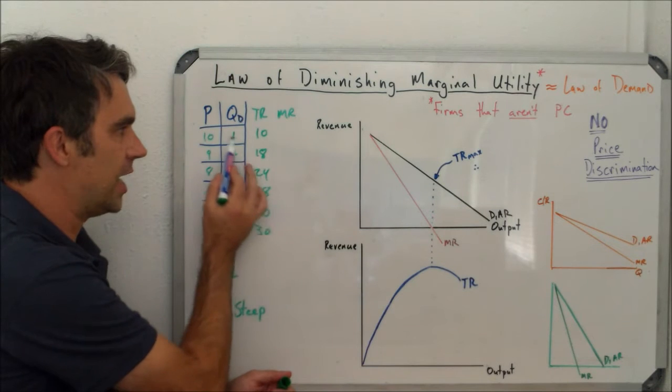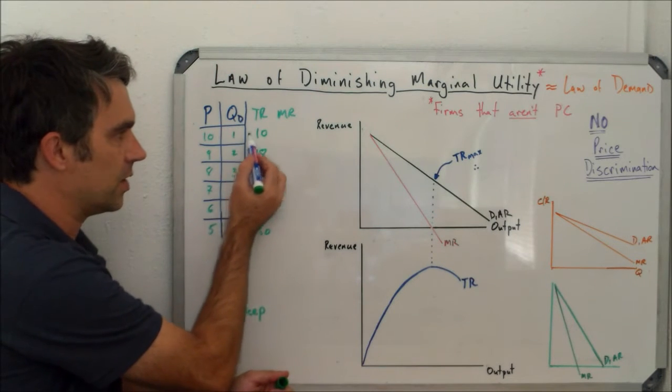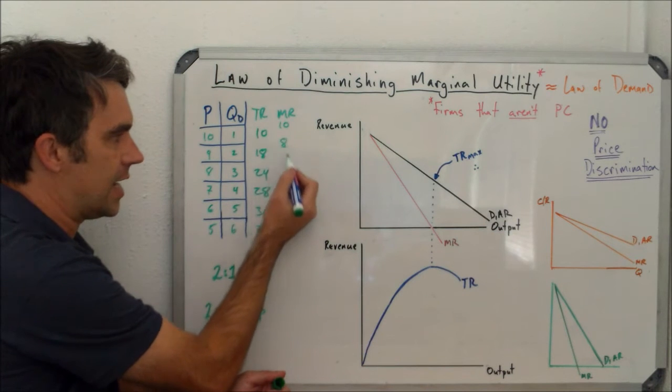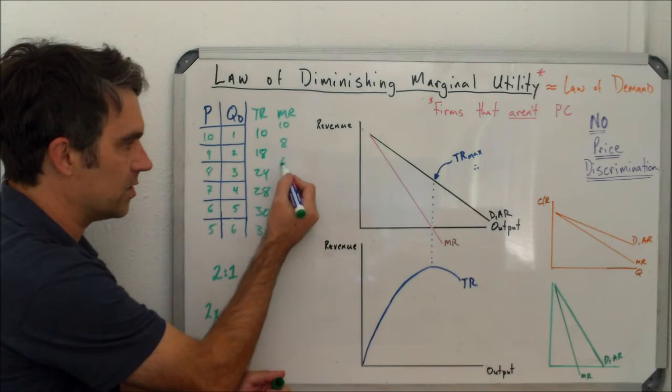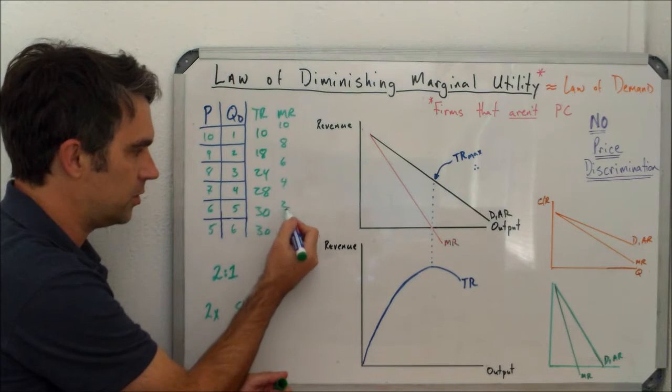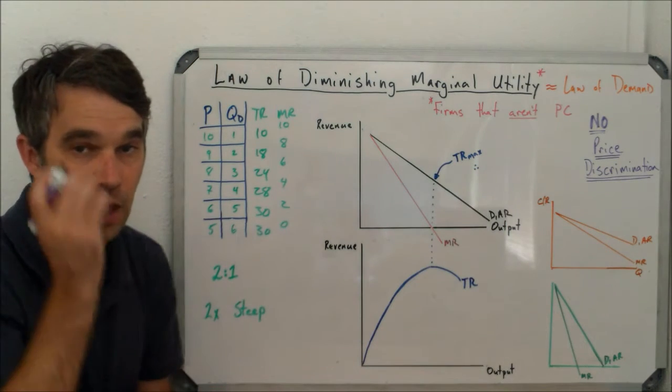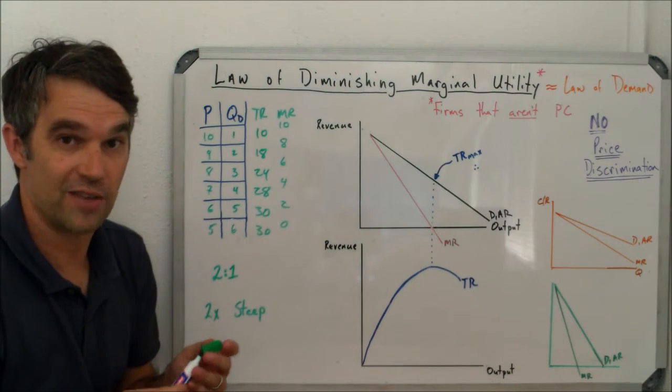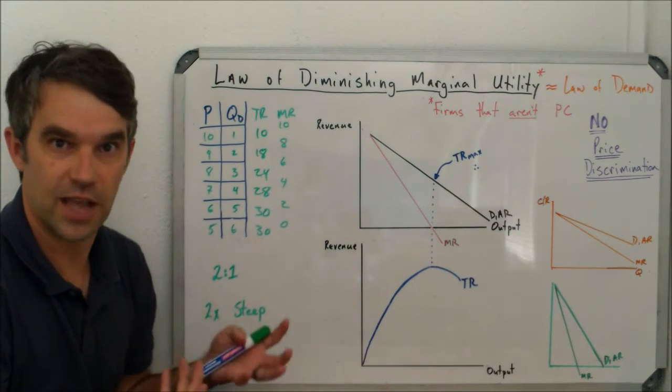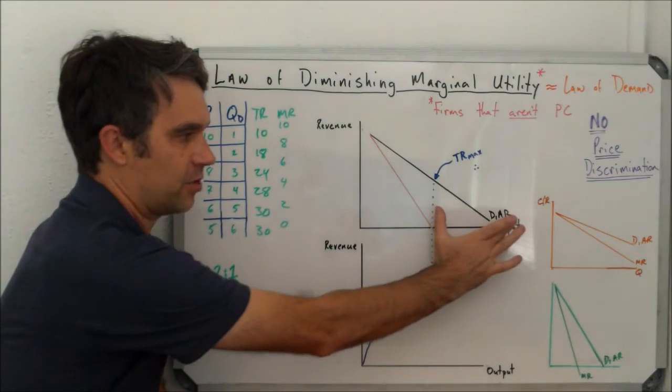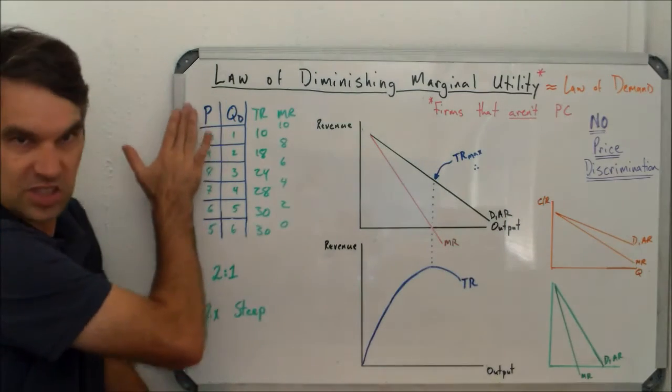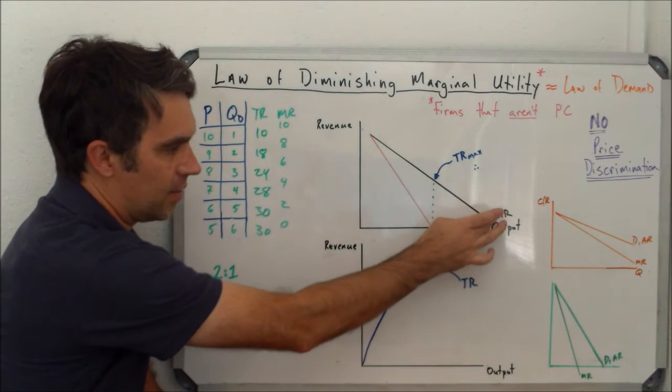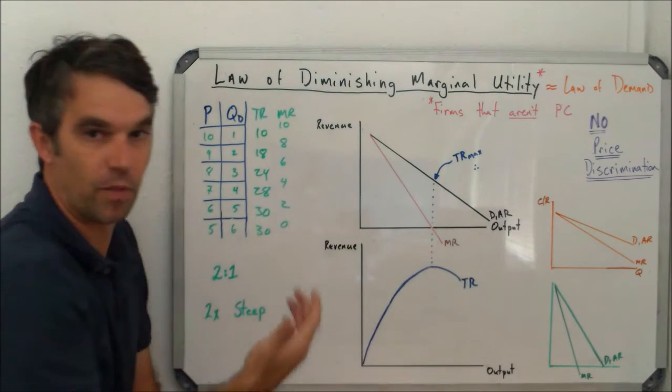So marginal revenue is the change, well remember here the change from 0 to 10 is 10, the change from 10 to 18 is 8, from 18 to 24 is 6, 24 to 28 is 4, 2, and 0. And it's from this right here, the marginal revenue that we derive a very important understanding in the relationship between average revenue, which again is the same as price, if there's no price discrimination, and so the relationship between average revenue and marginal revenue.